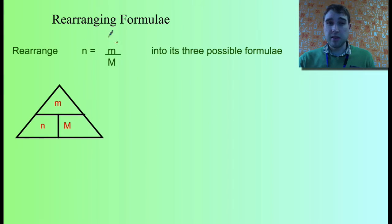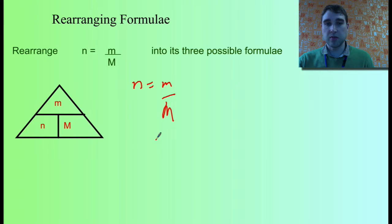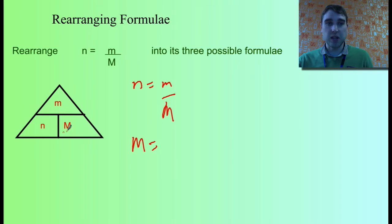You need to be able to rearrange this equation into its three possible rearrangements, making each of the three things a subject of the formula. The first one is n equals mass on molar mass (capital M) — the number of moles equals the mass divided by the molar mass. The second equation lets you find the molar mass: big M equals little m on n, which is the mass divided by the number of moles.